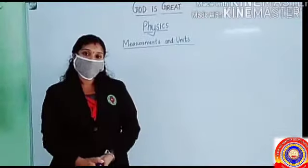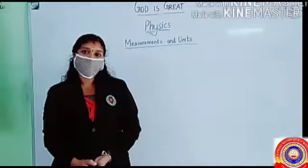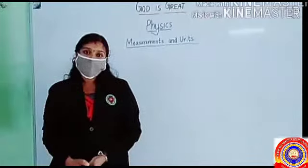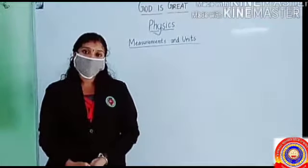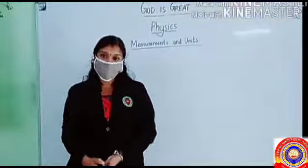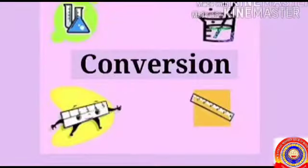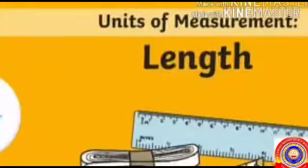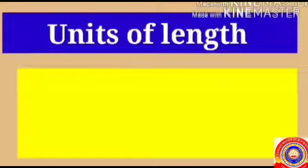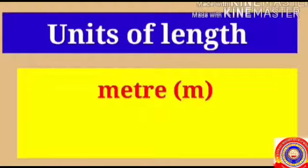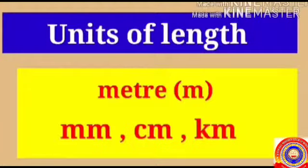Welcome back. In the previous class we discussed the rules to be considered while writing measurements. Today we are going to discuss how to convert one unit to another, that is conversion of units. You are now familiar with various quantities in the SI system. For converting units, let's consider length first. Along with the basic unit of length, that is meter, we use millimeter, centimeter, kilometer, and many other units.